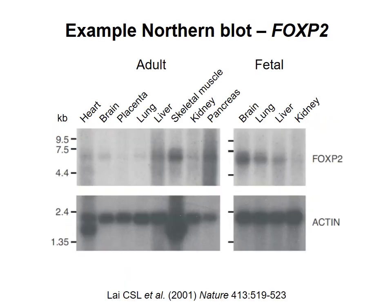Here's an example northern blot of a gene called FOXP2. You can see that the signal is stronger in some tissues than in others. The membrane has been separately probed for actin, which should be present in all tissues at the same level — this is a control to see if the same amount of RNA was loaded in each lane.